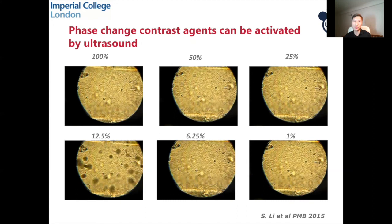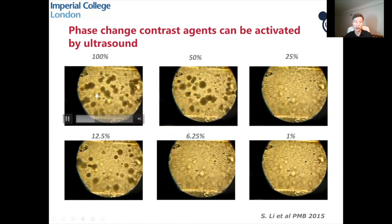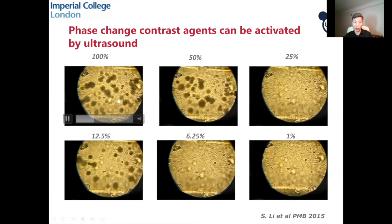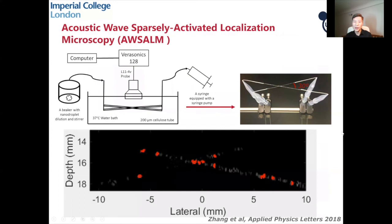Another potential solution to the long acquisition time problem is to use so-called phase change contrast agents. In optical imaging, you can turn agents on and off. Microbubbles cannot be turned on — they're always on. But phase change contrast agents can be activated, they can be turned on. These are perfluorocarbon nano droplets: initially they are not visible to light or to sound, but after ultrasound excitation, they pop into bubbles and are visible to both light and sound.